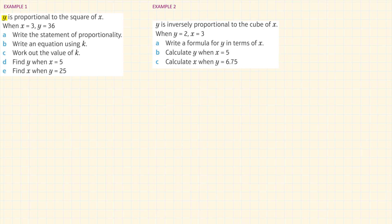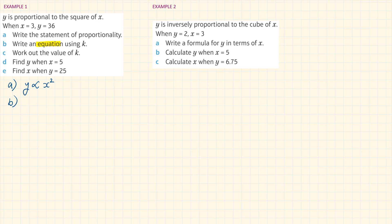Example 1. Y is proportional to the square of X. When X is equal to 3, Y is equal to 36. Write the statement of proportionality: Y, then the symbol of proportionality, and X squared. Write an equation using K: we swap the symbol with equal and K, so the answer is Y equals K X squared.